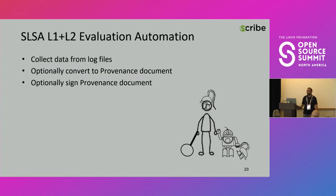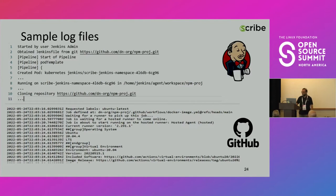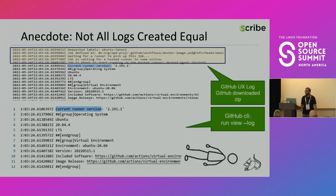So how would I automate the evaluation of the SALSA compliance? We can collect data from the log files, optionally convert this data to a provenance document in the format that SALSA suggests, and we can also sign the provenance document. If we look at the log files, we have most of the data — at least the minimal data required is there, and even much more. But care should be taken.